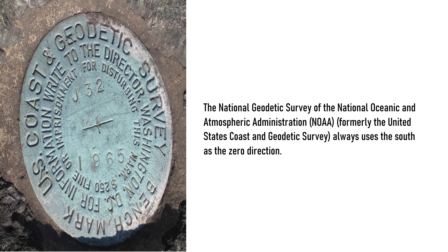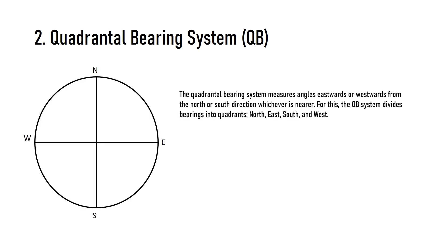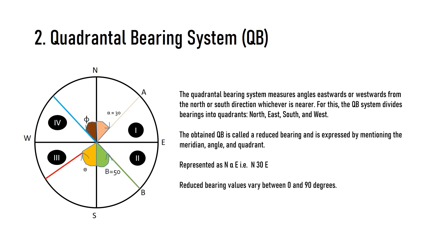The Quadrantal Bearing (QB) or reduced bearing system measures angles eastwards or westwards from the north or south direction, whichever is nearer. The QB system divides bearings into four quadrants: north, east, south, and west. The obtained QB is called a reduced bearing and is expressed by mentioning the meridian, angle, and quadrant. In the figure, line OA is in the first quadrant with the nearest meridian being north, so the bearing is measured clockwise (eastwards), giving alpha equals 30 degrees, represented as N-alpha-E.